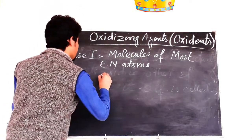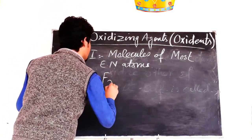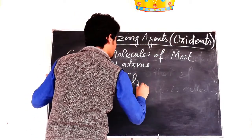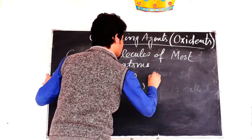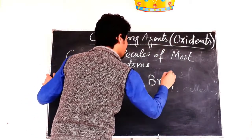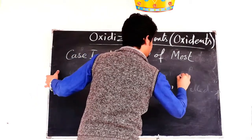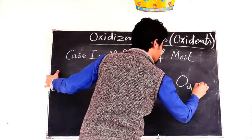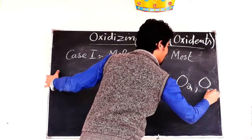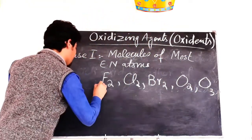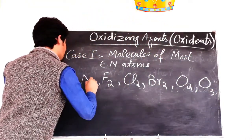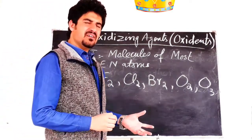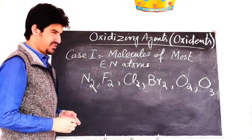For example, F2 is an oxidizing agent, Cl2 is an oxidizing agent, Br2 is an oxidizing agent, O2 is an oxidizing agent, O3 (ozone) is an oxidizing agent, N2 is an oxidizing agent. So all of these are oxidizing agents.